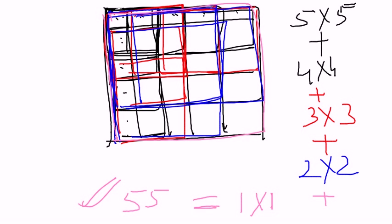One important thing to analyze: since our square was of unit 5x5, the counts started at five and decreased down to one. This pattern is the key thing to observe. Now let's take another example, this time with a rectangle of unit 7x4.